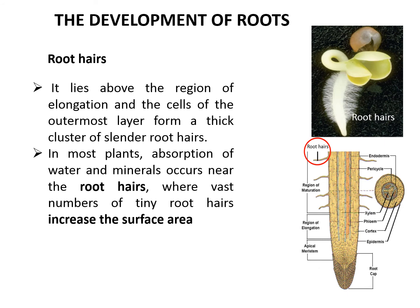Root hairs lie above the region of elongation, and cells of the outermost layer form a thick cluster of slender root hairs. In most plants, absorption of water and minerals occurs near the root hairs, where a vast number of tiny root hairs increase the surface area. In plants without root hairs, absorption is accomplished entirely through epidermal cells.